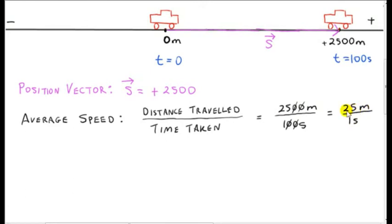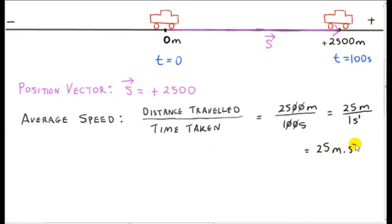Of course, in some seconds the car may do more than 25 meters, and in other seconds the car may cover less than 25 meters. If the car's speed is constant, in each second it will cover 25 meters. We can write this a different way: 25 meters divided by one second is the same as 25 meters multiplied by s to the power of minus one, since one over s to the power of one can be written as s to the power of minus one.